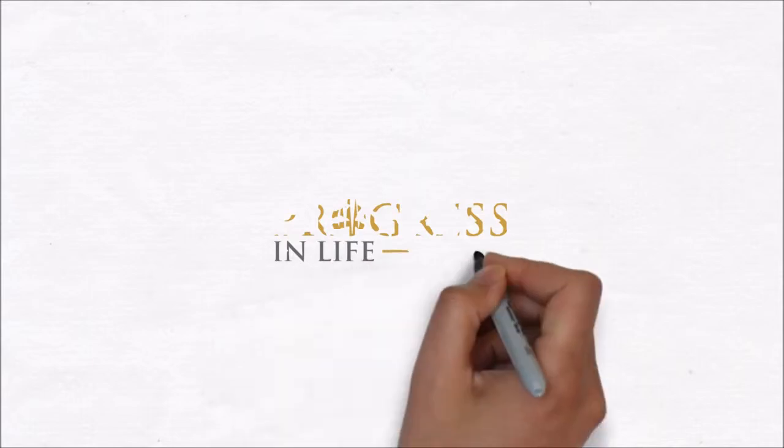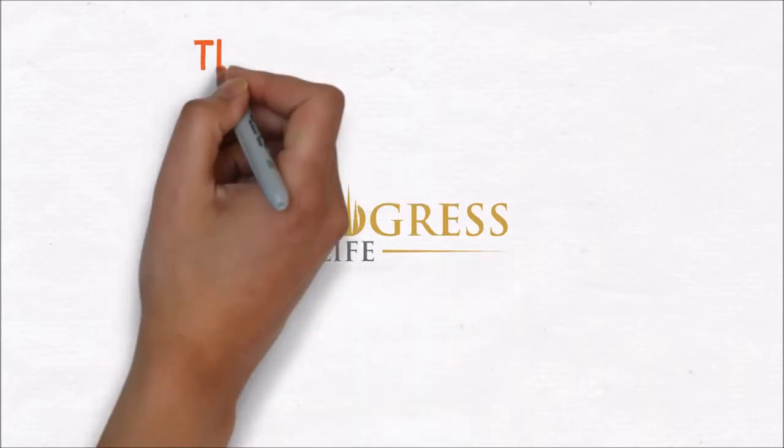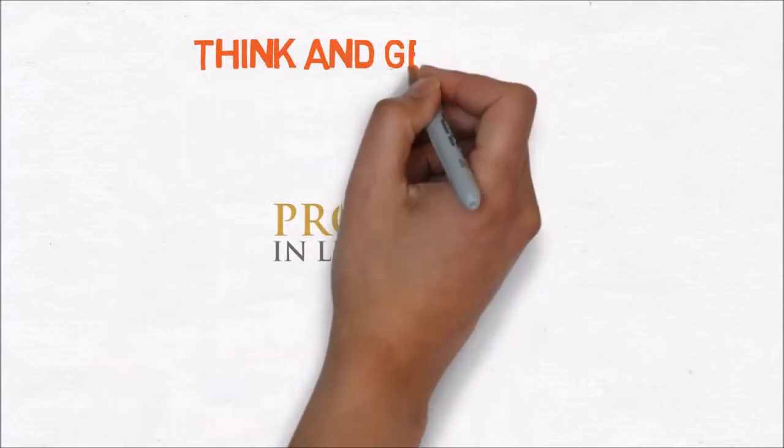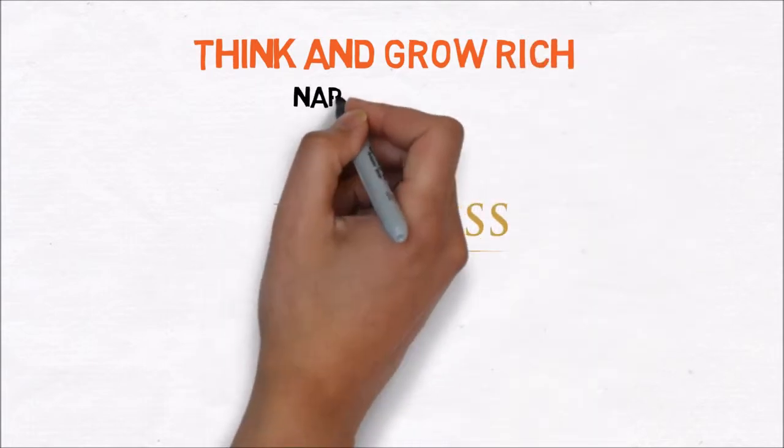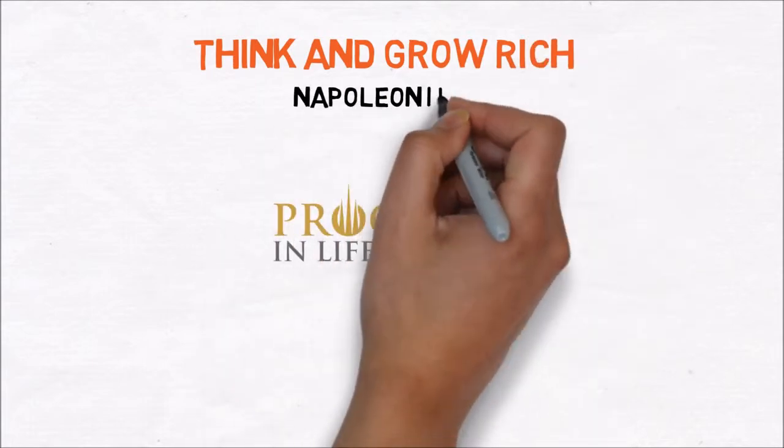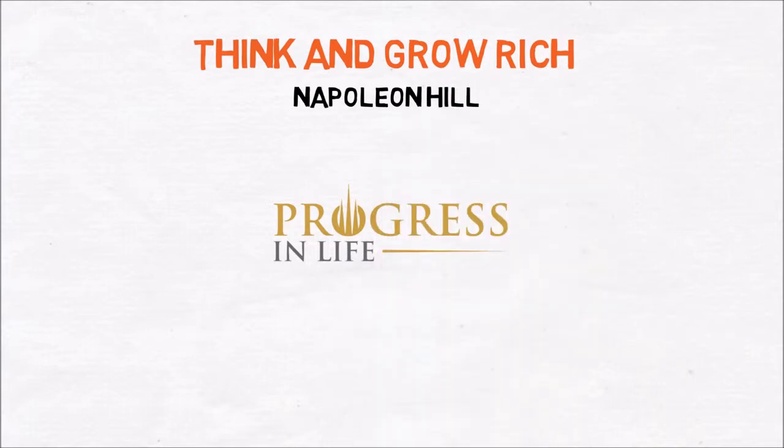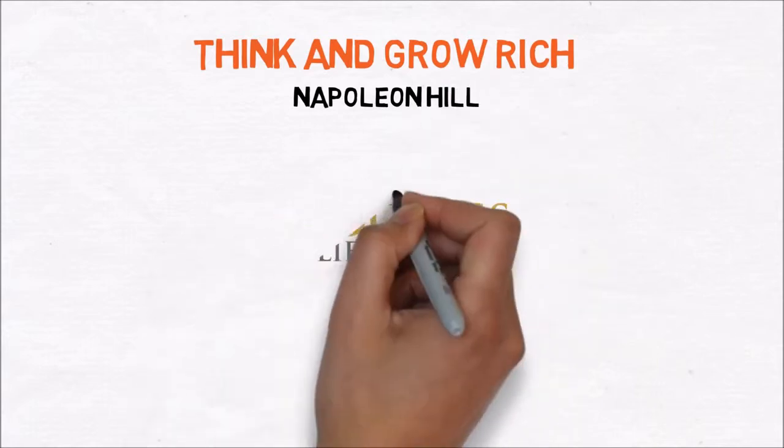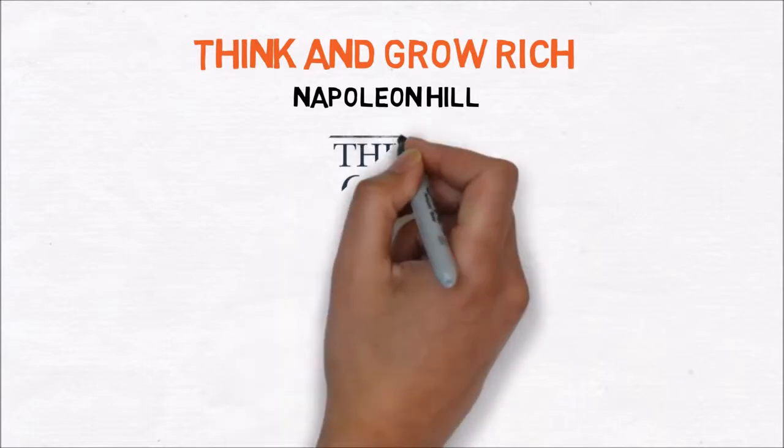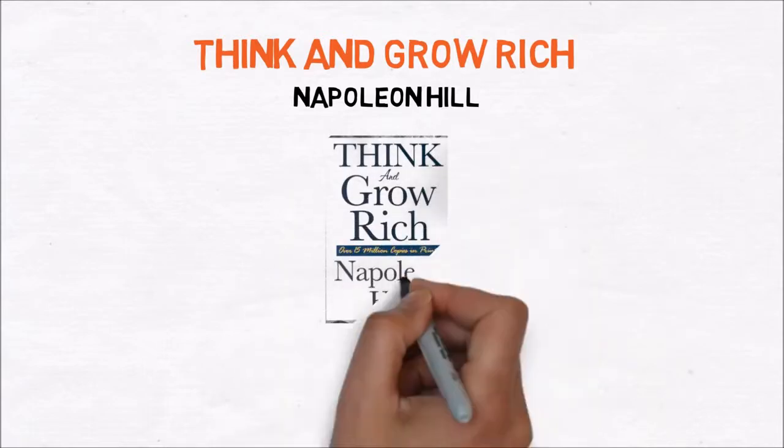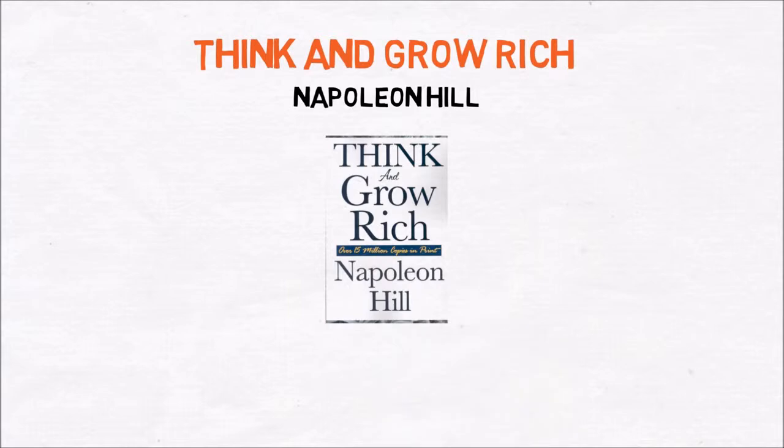Hi everybody, today we're going to talk about Think and Grow Rich by Napoleon Hill. In this video I will share the 13 steps to riches from this book with you. It was written by Napoleon Hill in 1937 and has already sold over 70 million copies. It's one of the most well known classics of all time for anyone who wants to be successful in life. So let's start with the first step.